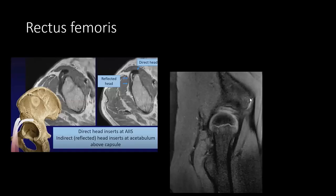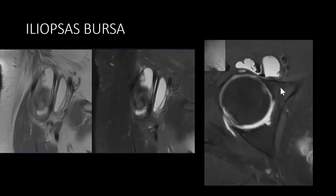The rectus femoris has different attachments. At the anterior inferior iliac spine there is a direct and indirect attachment. This is the direct head, and the reflected or indirect head goes on and attaches to the lateral aspect. So there are two tendons — rectus femoris has to be identified separately. Another important structure is the iliopsoas bursa. The medial tendon is the psoas, and this is the iliacus, which sometimes has two tendons. There is fluid communicated with the joint. So if there is an iliopsoas bursa, you have to also check for hip joint effusion, because there is communication between them.